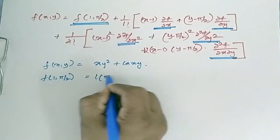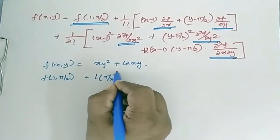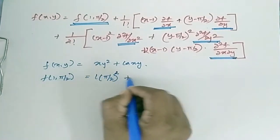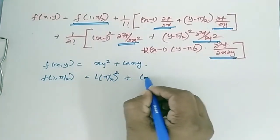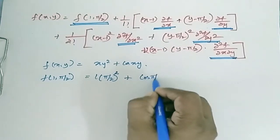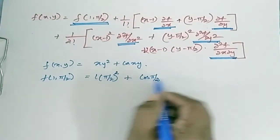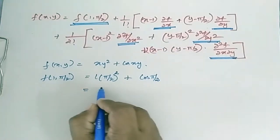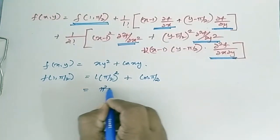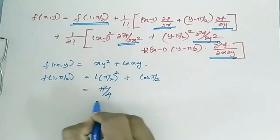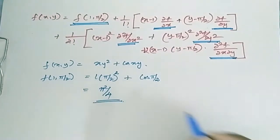f(1, π/2): substituting gives 1·(π/2)² + cos(π/2). cos 90° is 0, so this is equal to π²/4.